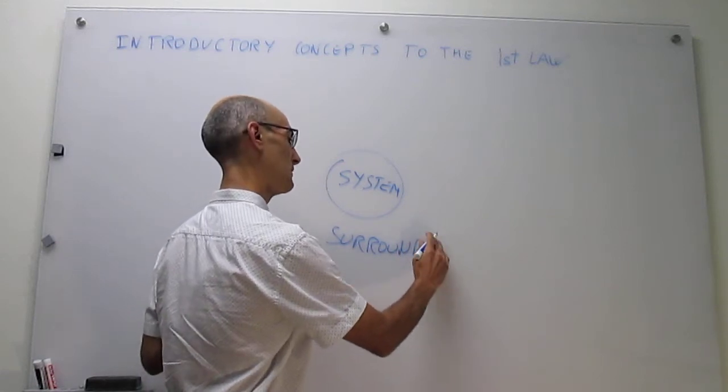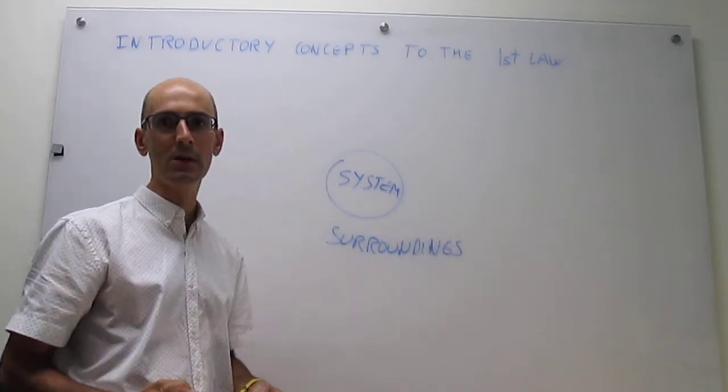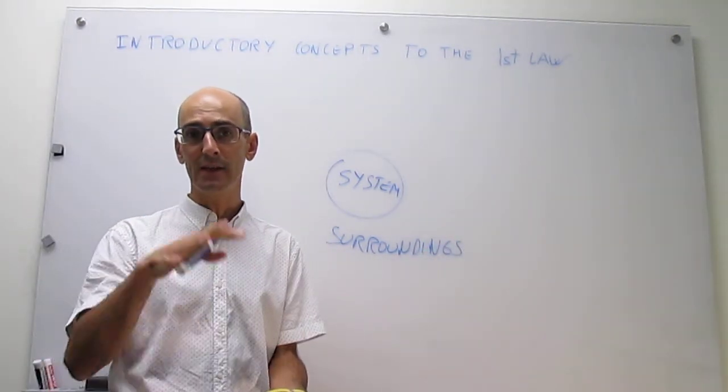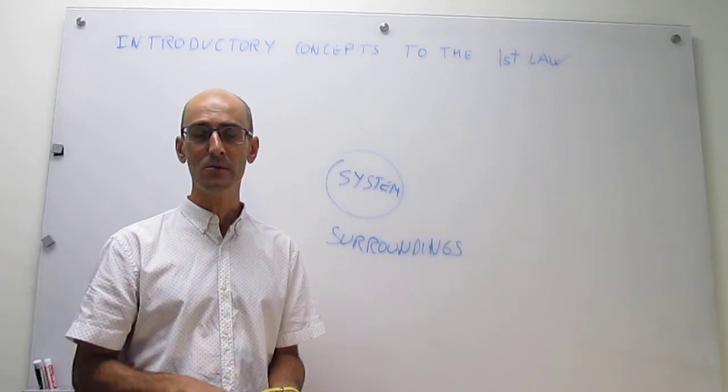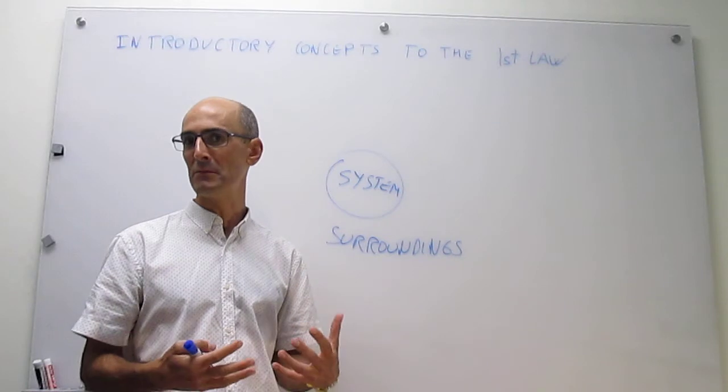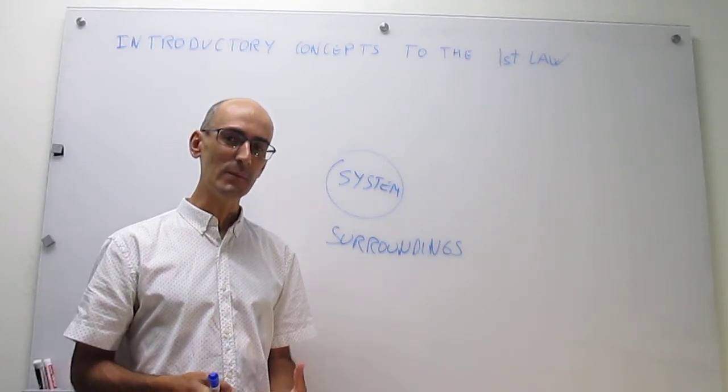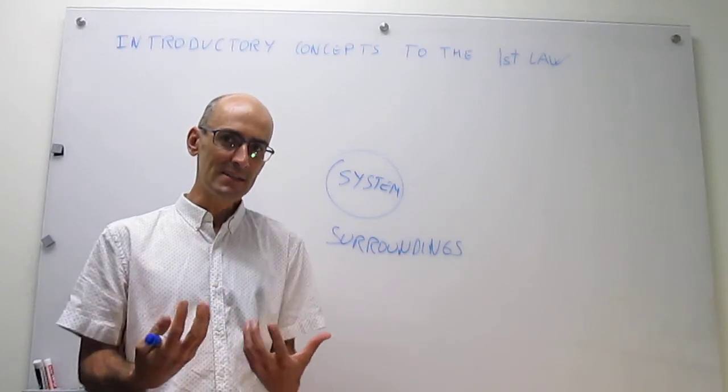So what could be the system then? Well, the system can be anything that you want. It could be maybe a gas inside a cylinder that can be moved up and down, or it could be maybe a protein solution, or it could be an ice cube, it could be a cell, it could be a human, it could even be a planet. So that's the system.